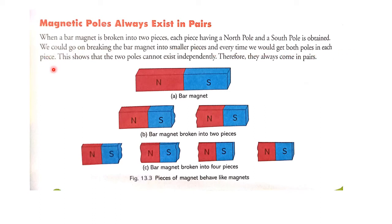We could go on breaking the bar magnet into smaller and smaller pieces, and every time we would get both poles — North and South — in each piece. This shows that the two poles cannot exist independently; they always come in pairs. You can see here: even when broken into two pieces, and then again into more pieces, every piece still has both poles.